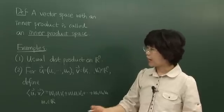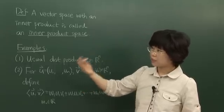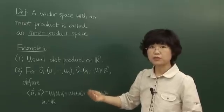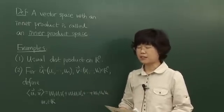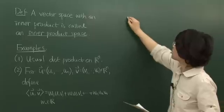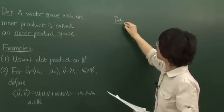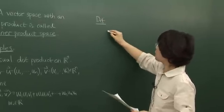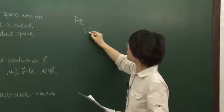Now, once we have an inner product, then we can think about length and angle. First, let's define in an inner product space the norm or length of a vector U.